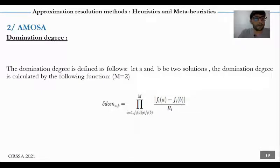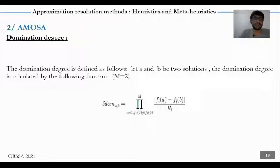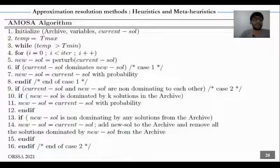We go now to the AMOZA meta-heuristic. We present the domination degree. The domination degree is defined as follows: let A and B be two solutions. The domination degree is calculated by the following function, where M equals 2 because of the two objectives. The AMOZA algorithm is presented as follows: we initialize the archive, the variables, the current solution, and we initialize the temperature equal to T_max.